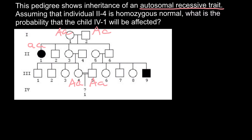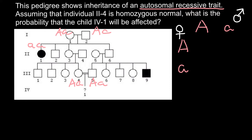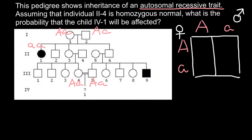Now, what is the probability for individual 2,3 — the child in the second generation — to be heterozygous? We have to find this probability because only if she is heterozygous can she be phenotypically normal yet still pass the defective allele to the following generation. Both of her parents are heterozygous, so let's set up the Punnett square with the father's genotype Aa and the mother's genotype Aa.